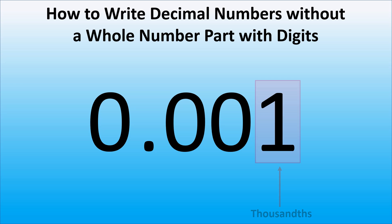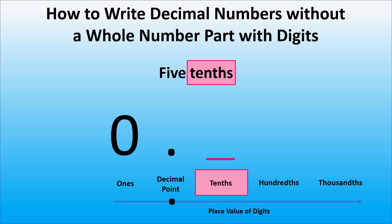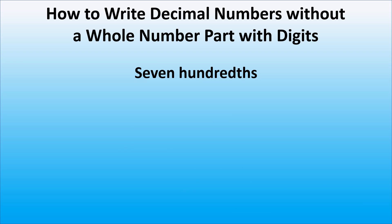Let's practice how to write decimal numbers with no whole number part. How will we write five tenths in digits? As we don't have a whole number part, we will write zero followed by the decimal point. Tenth means that there is one digit to the right of the decimal point. Thus, we will write the digit five in the tenth place.